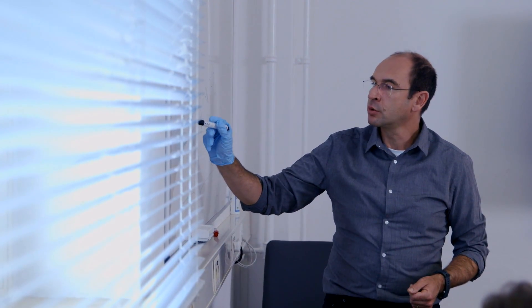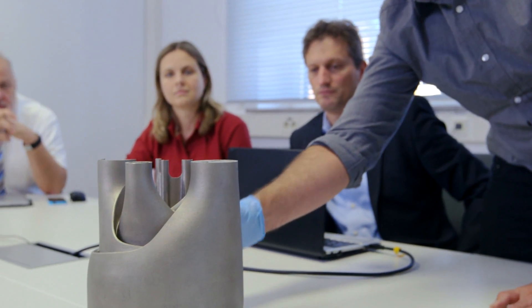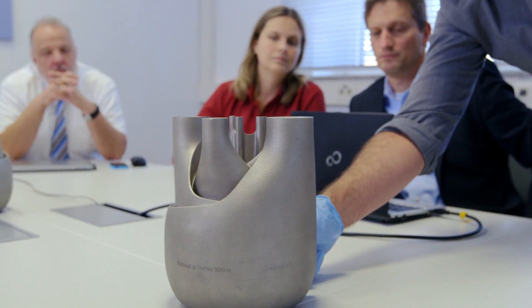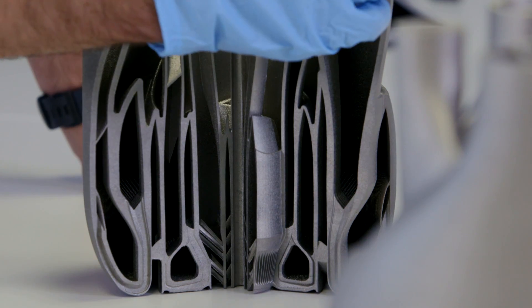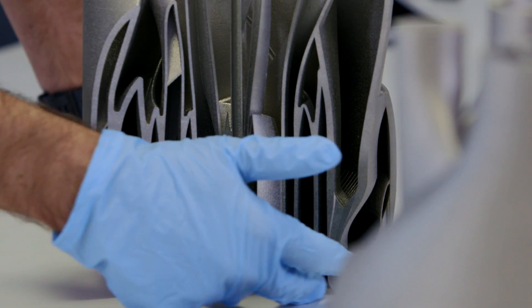At Siemens, we have already taken a step in the direction of the first-time-right principle with the help of research and development. We are much closer to our goal of providing a robust process. At the end of the day, the manufacturing robustness decides whether my production is economically worthwhile.